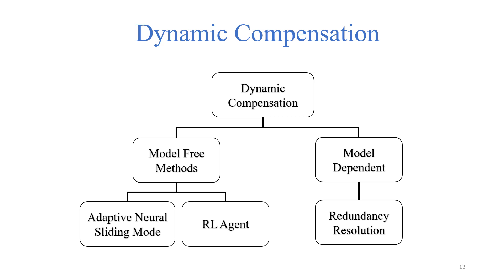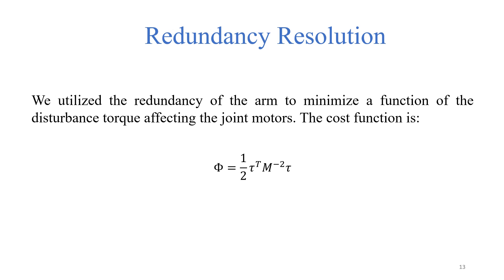The problem with computed torque control is that the arm available in our lab does not support torque commands — we cannot send torque commands to the actuators. This means we must find methods that compensate for dynamic effects at the velocity or position level, which are available at the servomotors. We refer to this as dynamic compensation, and we discuss two types: one model-dependent method that utilizes the arm's redundancy, and two model-free methods — one using reinforcement learning agents and one using an adaptive neural sliding mode controller.